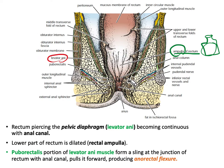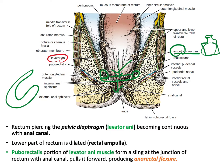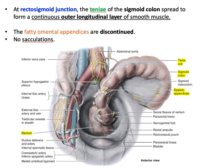The levator ani muscle forms the pelvic diaphragm and has three parts. The most medial part is the puborectalis muscle, which forms a U-shaped sling around the junction between the rectum and anal canal, creating what is called the anorectal flexure.